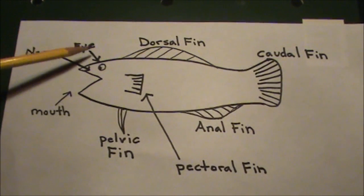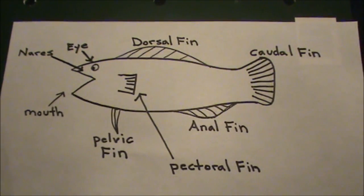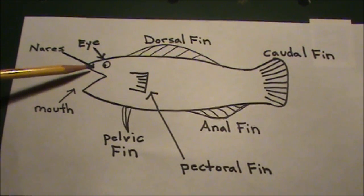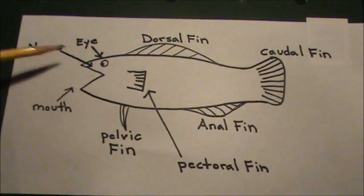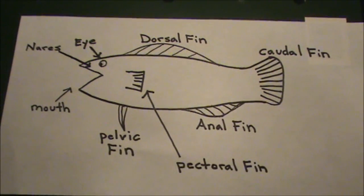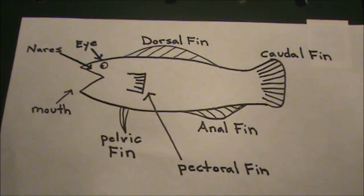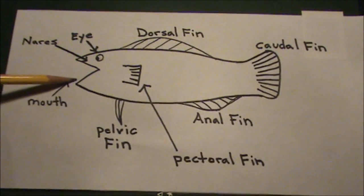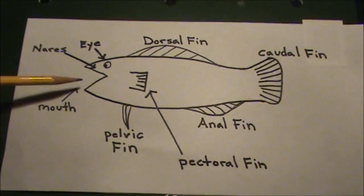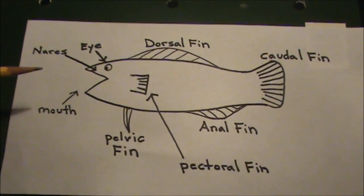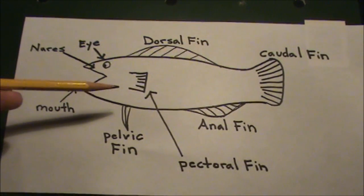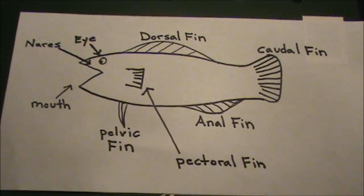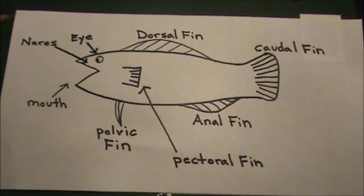Let's start out with the eye, which they use to see, obviously. And then right in front of that we have the nares, or the nostrils, which they use to smell things through the water. And right below that we have the mouth, which they use to inhale water for breathing, which I'll explain later on, and also eating.